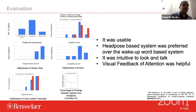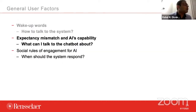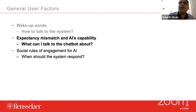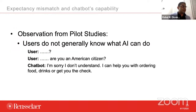Next: expectancy mismatch between AI's capability and what we know about AI's capability. How many times do you go to Siri or Alexa and wonder: if I told it to switch off the lights, will it be able to do that? This is a problem all across whenever we talk to AI agents. In our pilot studies, we saw users just walk in with no words — you could see the confusion on their faces. They would ask something like, 'Oh, are you an American citizen?' and the chatbot would say, 'Sorry, I don't understand.' That's the most annoying thing you can hear from an AI agent.